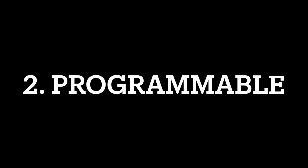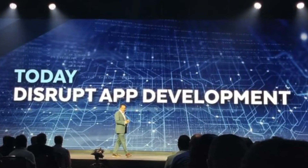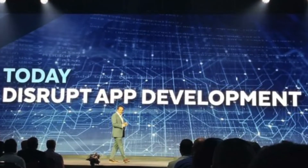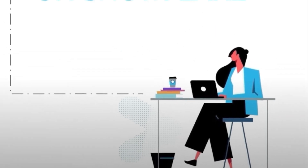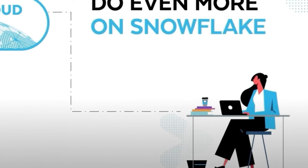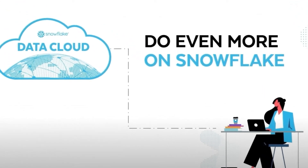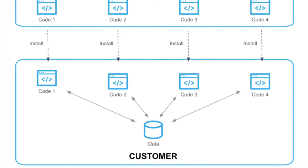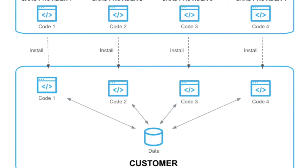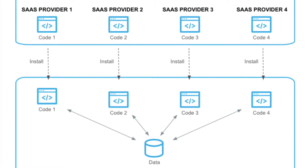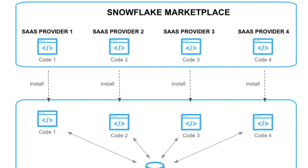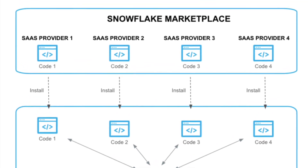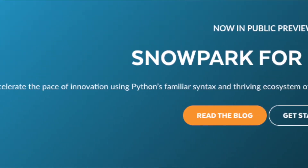The second pillar is all about being programmable. Snowflake are making a big play towards being the place where data applications are built. They have significant advantages because data applications need to use many different workloads and a wide range of data. Combine that with all data and all workloads, and it opens the door for data engineers to build applications on top of Snowflake, pushing the envelope beyond standard database functionality. This includes the announcement for Snowpark with Python, which is now in public preview.